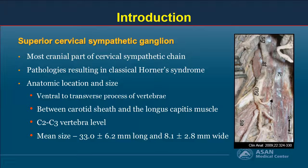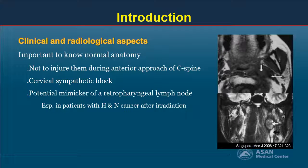In previous reports, its classic location is posterior to the transverse process of the cervical vertebra, embedded in the connective tissue between the carotid sheath and the longus capitis muscle at C2 or C3 vertebra. Clinically, it is important to know the normal anatomy to avoid injury during the anterior approach in cervical spine surgery and during cervical sympathetic block for patients with intractable facial pain.